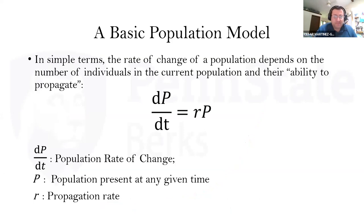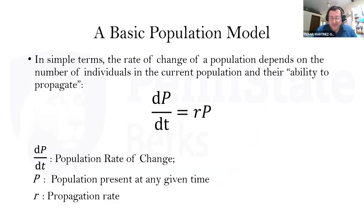Let me switch gears and talk about the basic population model. If you're interested in breeding bunny rabbits, you want a consistent source — your population propagating for a profitable business. The population rate of change, dp/dt, is equal to a propagation rate R times the population present at any given time. It makes sense: to make bunny rabbits, you need bunny rabbits. Bunny rabbits have a specific propagation rate, and the rate of change of the population depends on how many members are together at any given time.